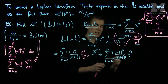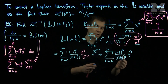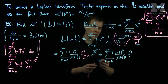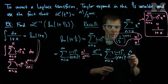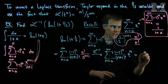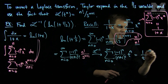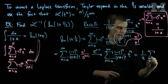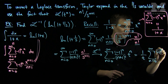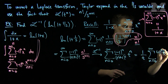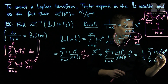Now I see that my series starts at 0, so this is a Taylor series of a common function. We have to manipulate the series a little bit to figure out how to represent this function. We can write this as 1 over t, times the sum, n goes from 0 to infinity, of negative 1 to the n, times t to the n plus 1 over n plus 1 factorial.